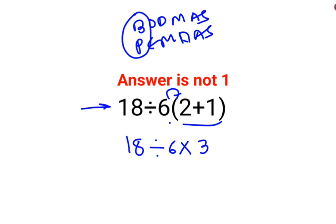So next thing what a lot of people do is 18 divided by 6 multiplied by 3, which is 18, and then the answer is 1. Now at this point people went wrong.